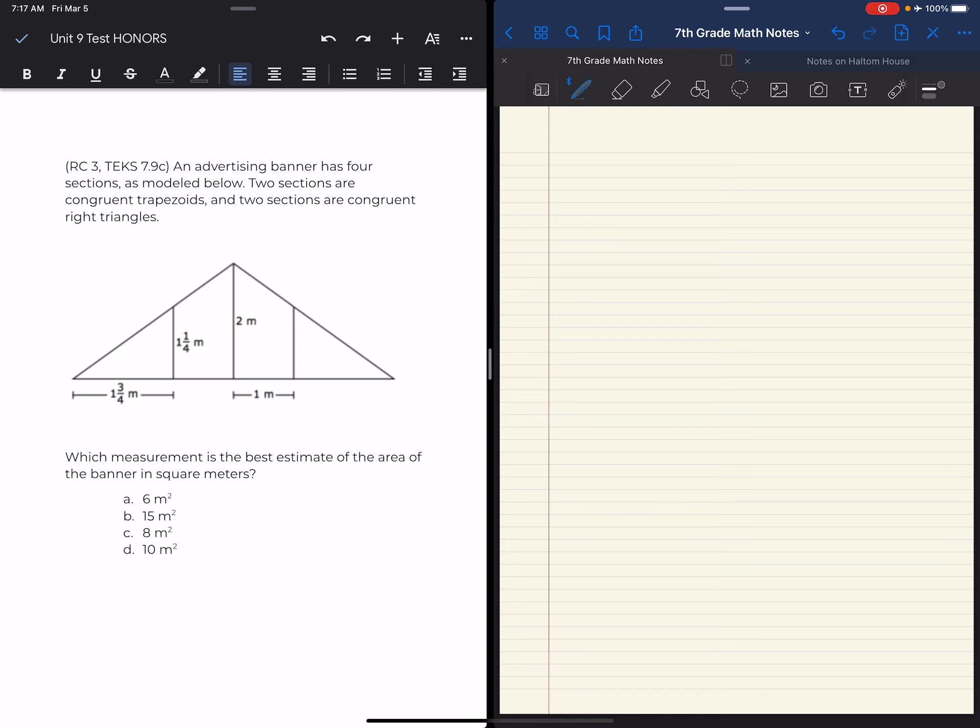Okay, the word congruent means exactly the same - equivalent, equal. So my two trapezoids are the same, and my two triangles are the same.